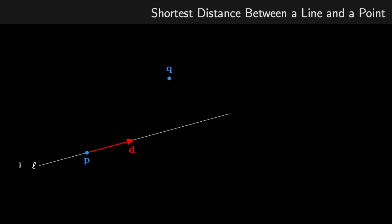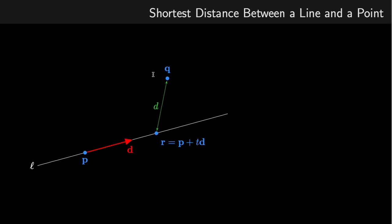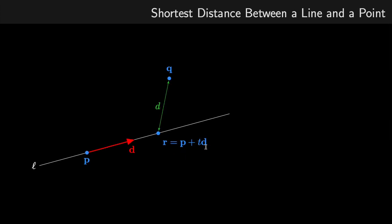Here I've got a diagram with a line L. In a previous video, we've seen that a line can be defined by a point on the line — P is any point on the line, and D is a direction vector, giving us the direction the line is pointing in. I've got another point here, Q. The vector equation of a line is P plus our parameter T times the direction vector D, so P plus TD.